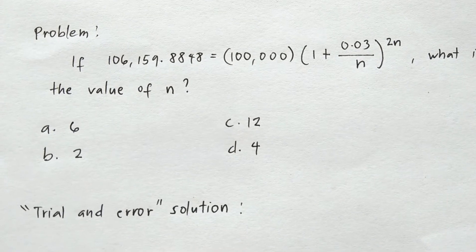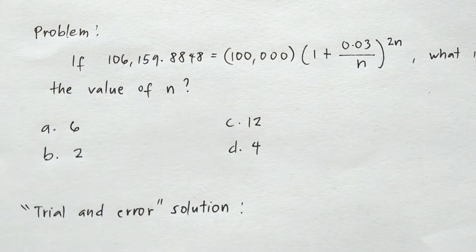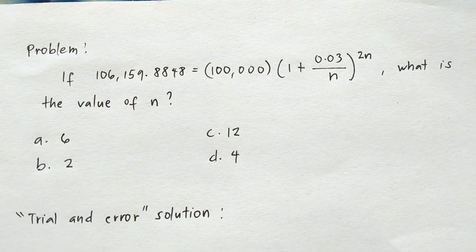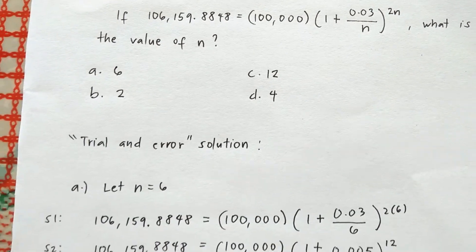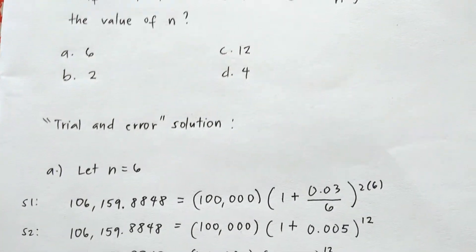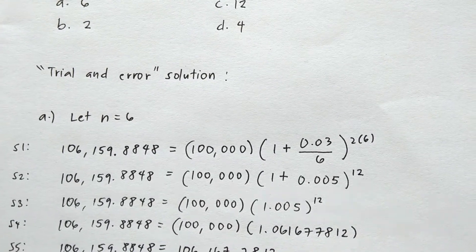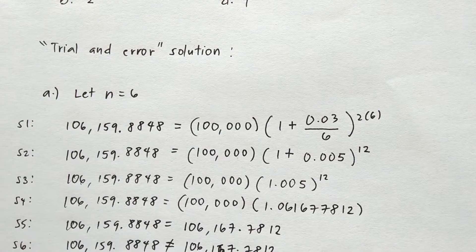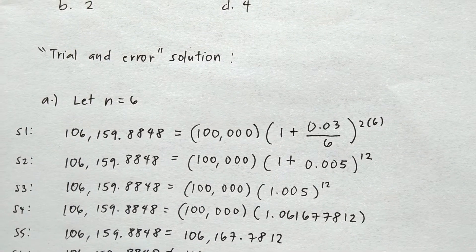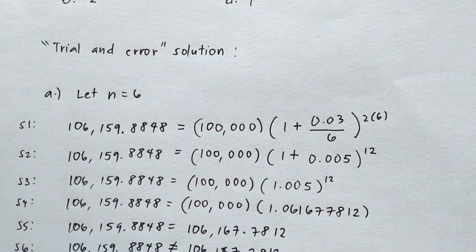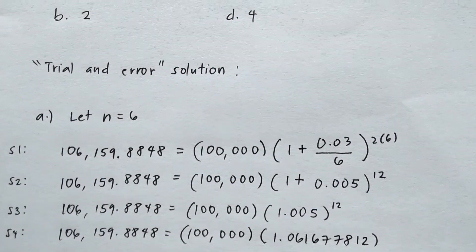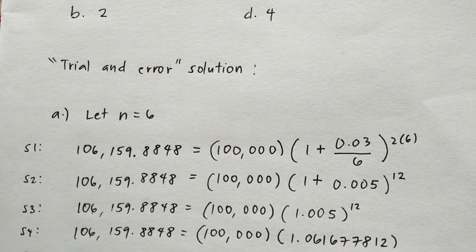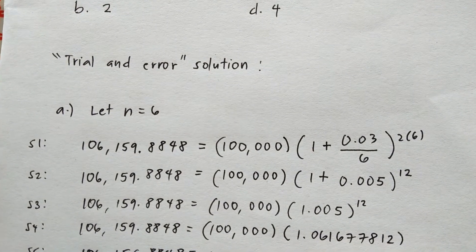So I have here the trial and error solution. This solution is the easiest one that I can share with you, because I tried to use the logarithmic and other solutions, but trial and error is the easiest and fastest way that you can do to find the value of the variable n.